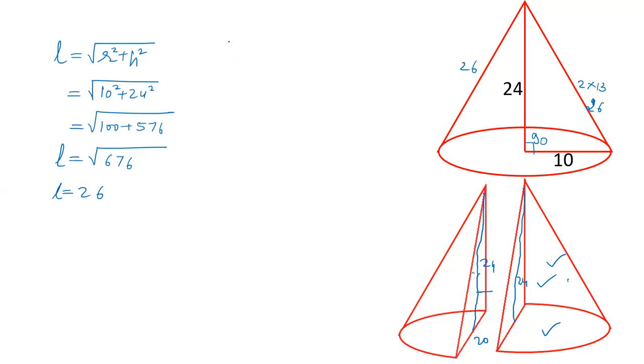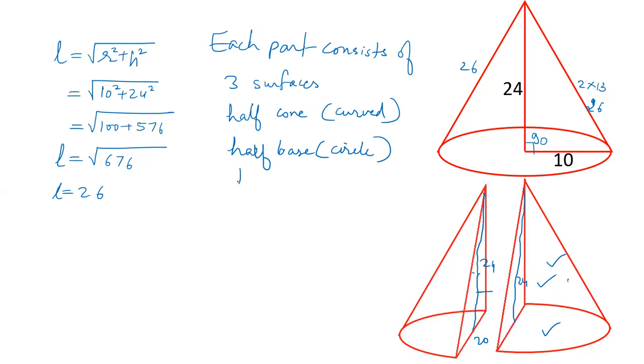So each part consists of three surfaces. One is half of cone curved surface, then half of base which is semicircle, and then a triangle.